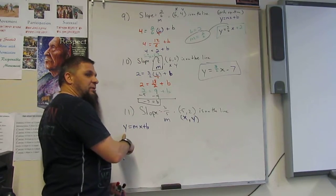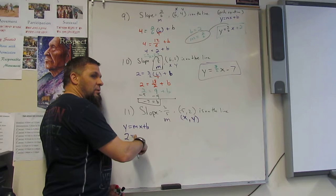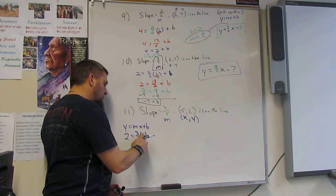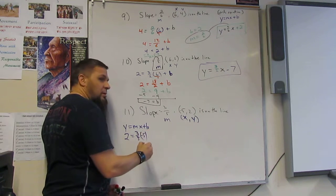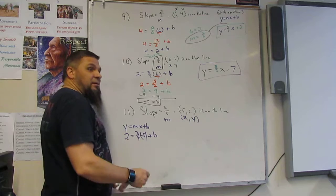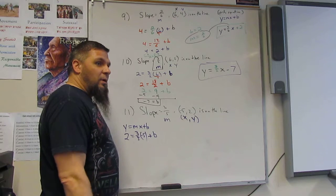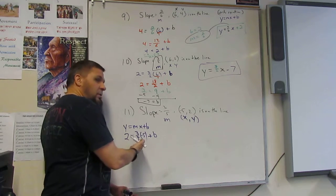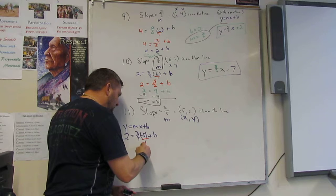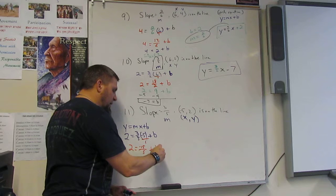And then plug them in. Y is how much? Two. M is? Three over five. X is? Negative five? Yes. And B is? B. That's right. So we're solving for B? That's it. So now we've got negative five over one. So that would be negative 15 over five equals two plus B over here, right?